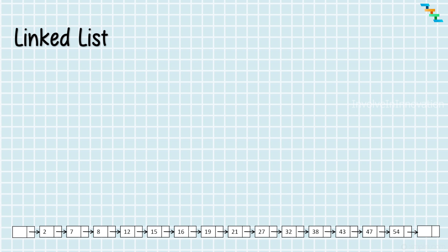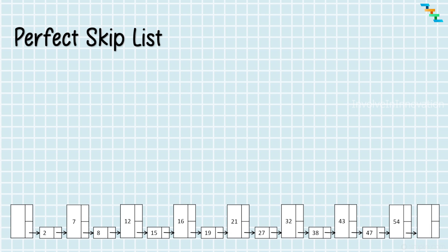We will start with the sorted linked list. In the skip list, we will have multiple layers to facilitate faster searching. The bottommost layer is the linked list. We add a layer just above the bottommost layer. In this layer, we skip one element. The head and tail of the linked list are empty, so from the head we start at the second element 7, skipping the first element 2. We link element 7 to the fourth element 12, then 12 to the sixth element 16, and so on till the tail.